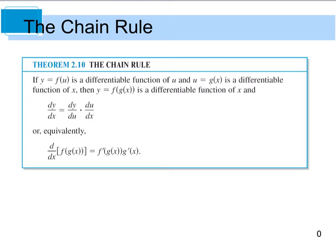This is the book definition for the chain rule. It says if y is some function equal to f of u, and it's a differentiable function of u, and u is equal to some other function g of x, which is also differentiable, then y is equal to f of g of x — which is a composite function — and is a differentiable function of x. So to find the derivative of y, we take the derivative of y with respect to u, and multiply that by the derivative of u with respect to x.